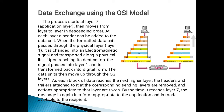As each block of data reaches the next higher layer, the headers and trailers attached at the corresponding sending layers are removed and actions appropriate to that layer are taken. By the time it reaches layer 7, the message is again in a form appropriate to the application and is made available to the recipient.